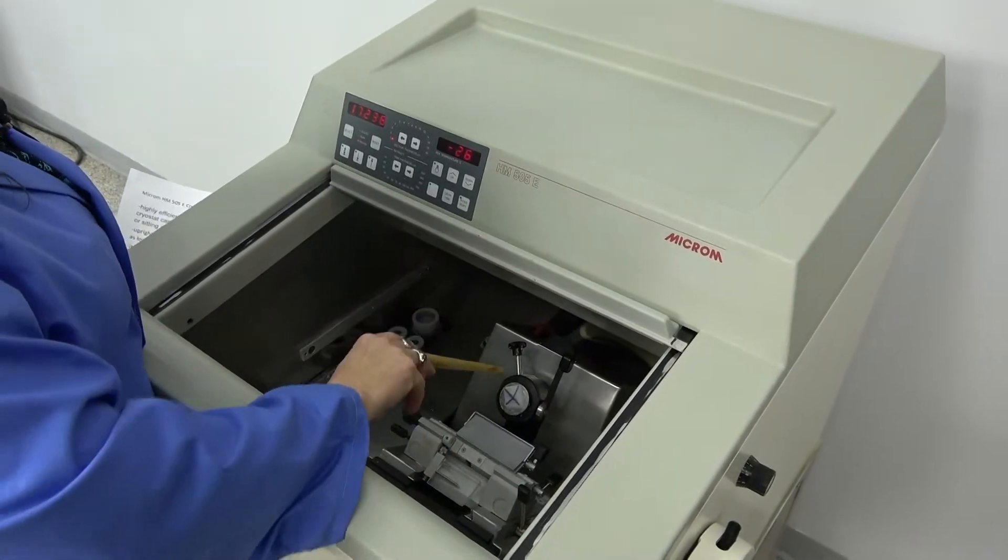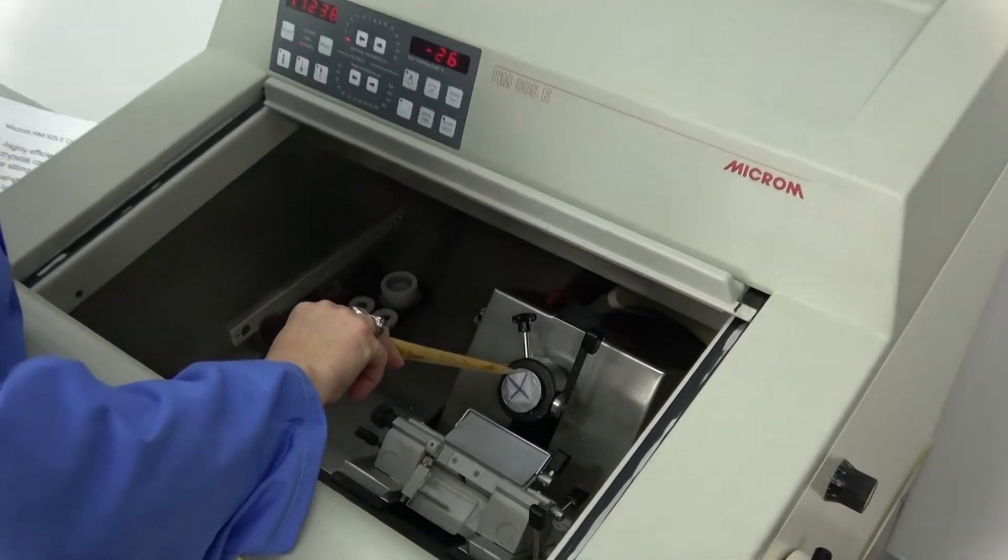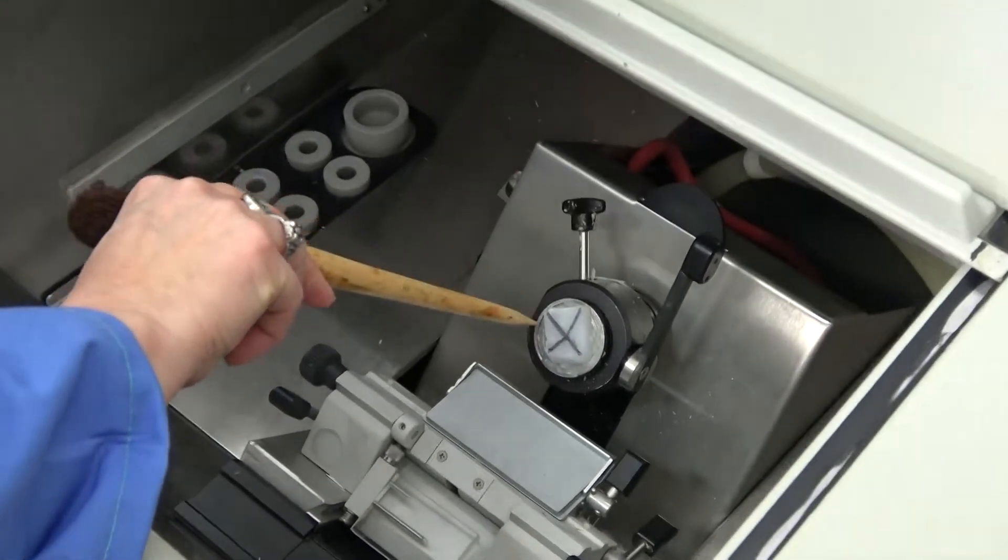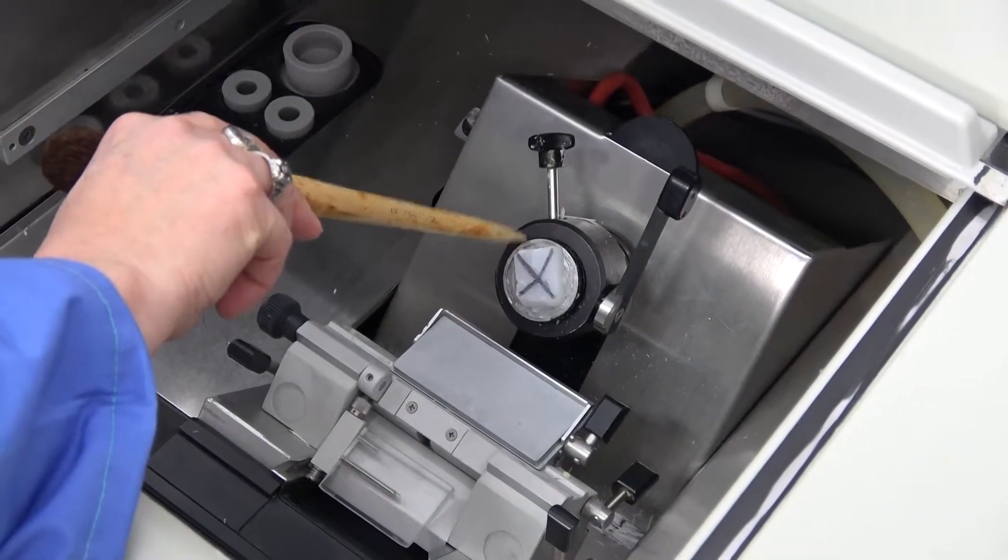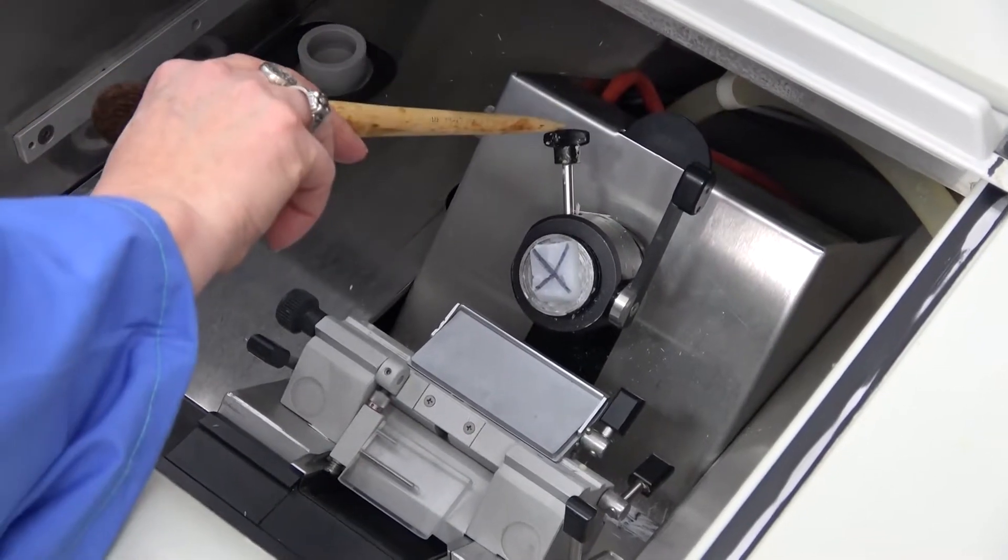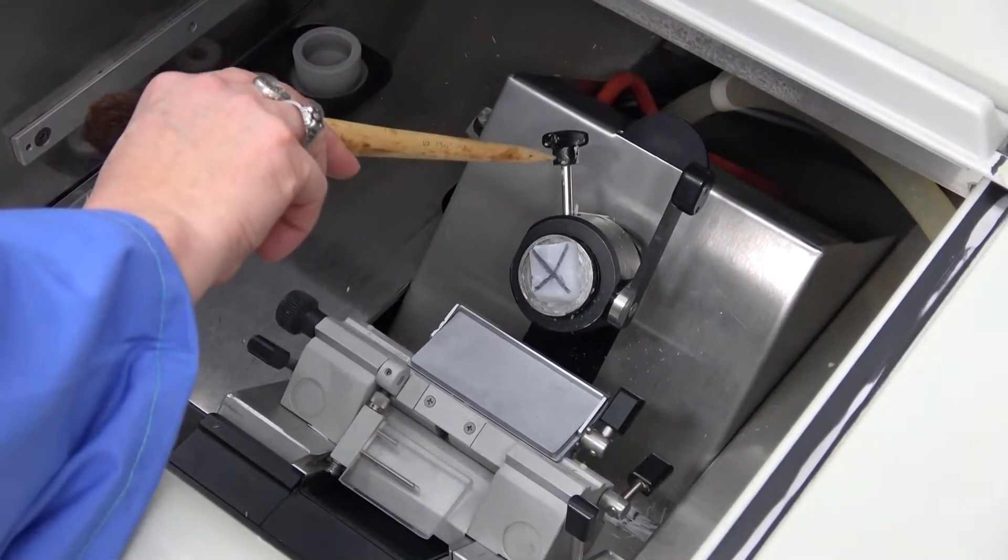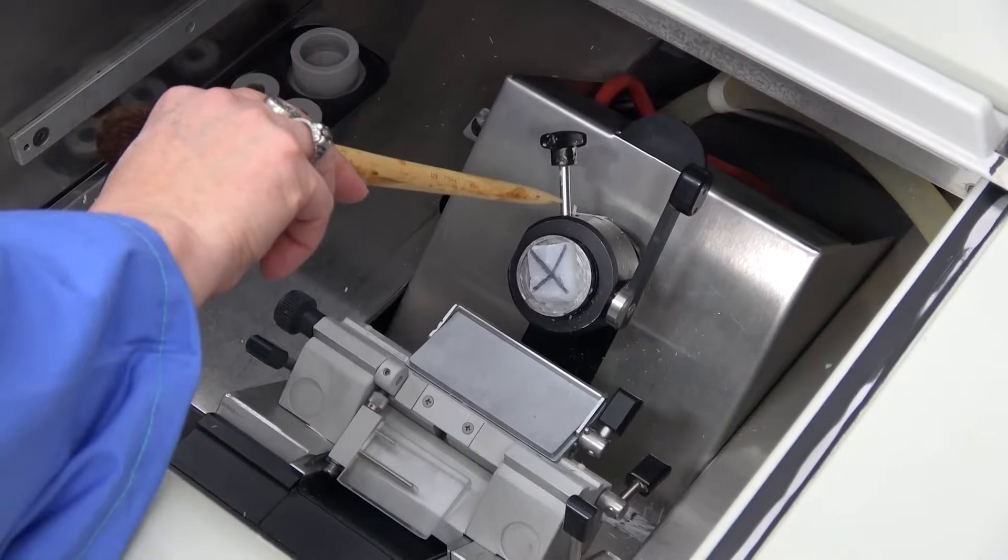The stage with your sample sits right here. Today, we have it mocked up with a piece of paraffin that has no cellular sample on it. It cranks in tight here. This does not need to be any more than finger tightened.